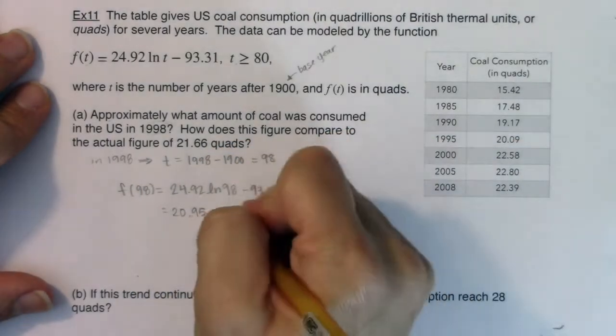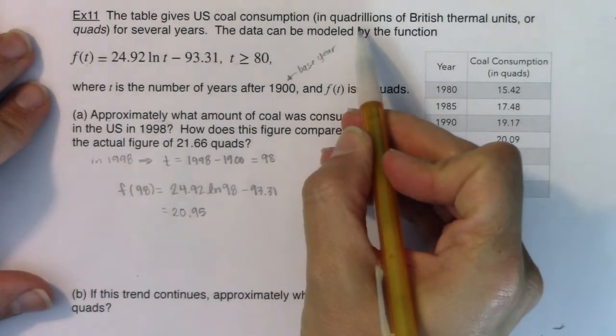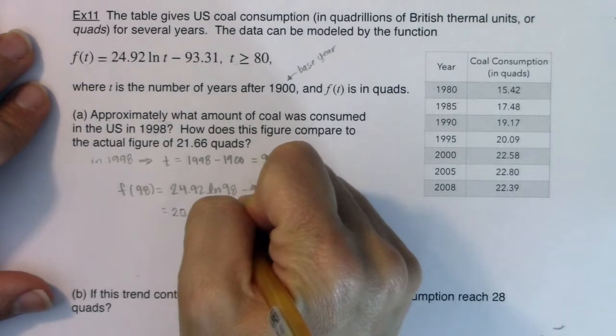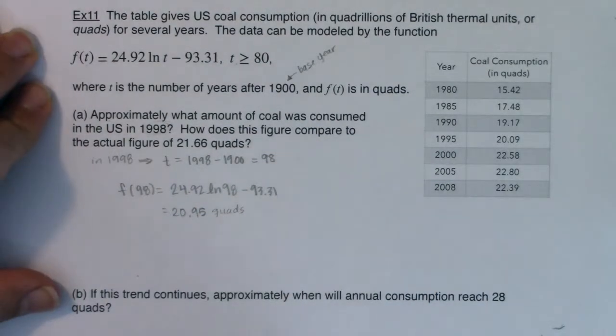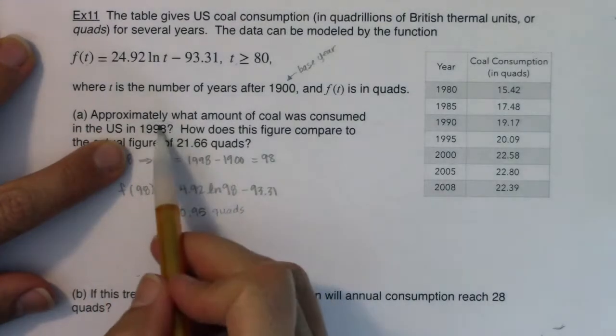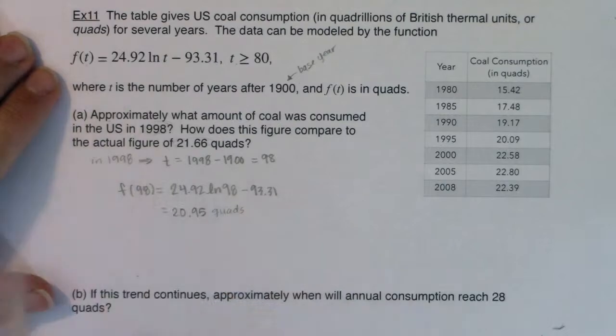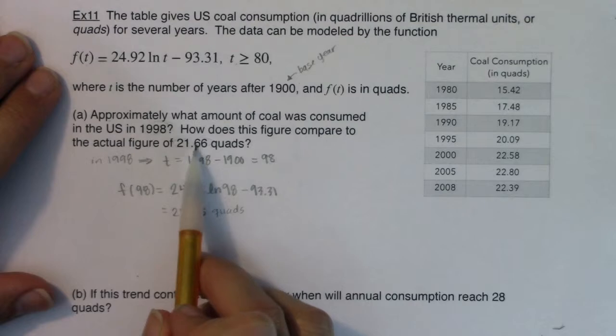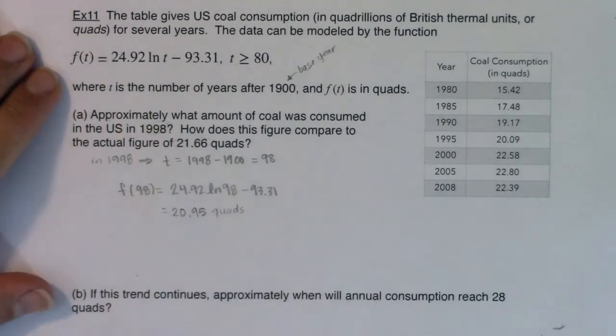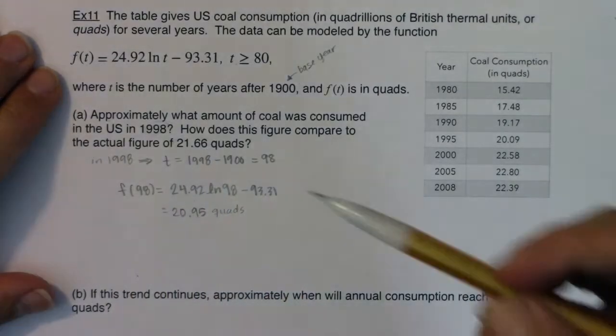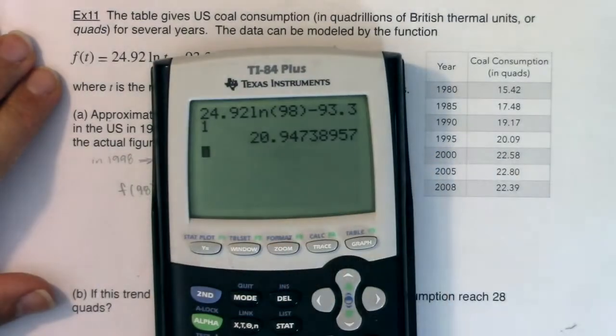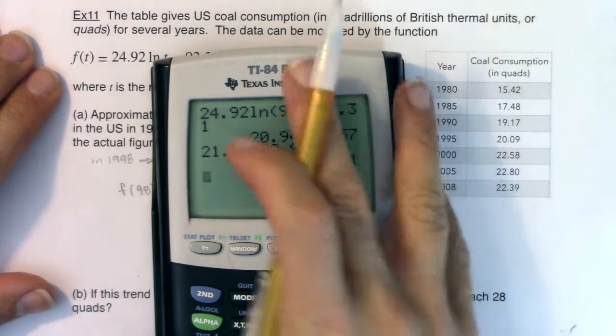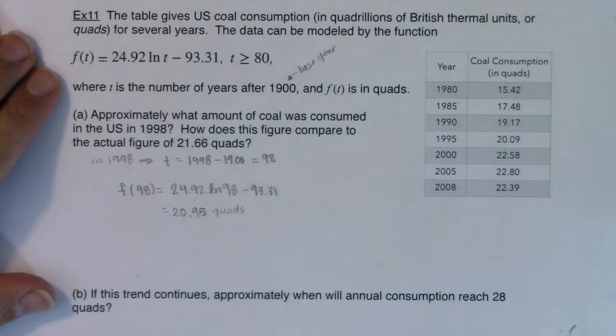And what would the units on this be? It looks like it's quads. And I don't even know what quadrillion British thermal units are, I just know that more coal consumption is bad. So we've got that. That's what we thought would happen in 1998. What actually happened in 1998? Our coal consumption was 21.66. So my guess, my estimation from my model was actually an underestimate of what actually happened. It underestimated the real figure in 1998. I would say it was pretty close. It wasn't too far off. If we want to look at the difference between what happened and what I predicted, it was off by 0.71 quads. So that's not a terrible number to be off by, but I do want to point out that I underestimated.